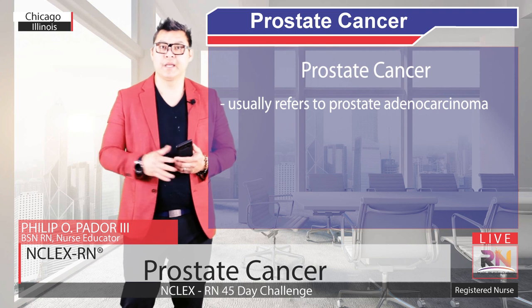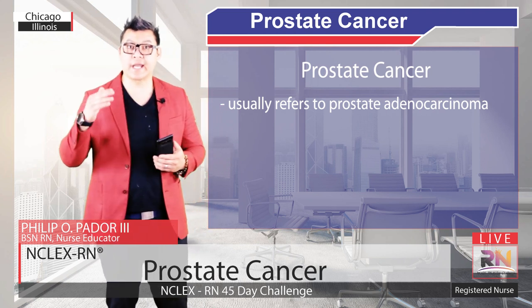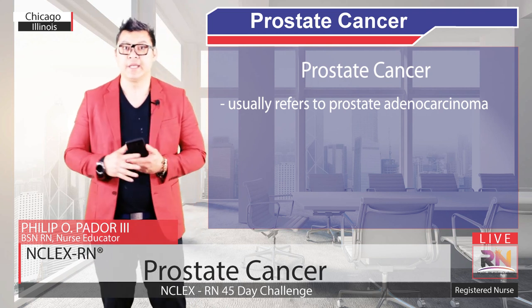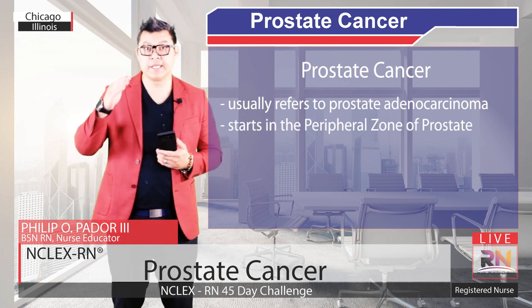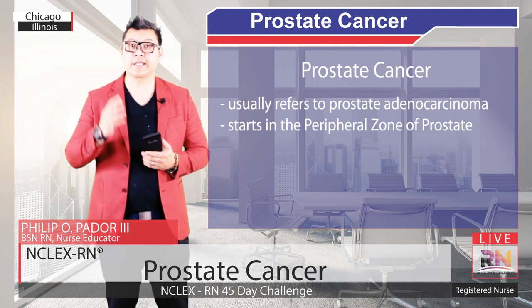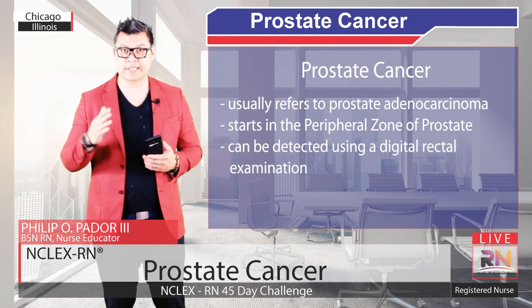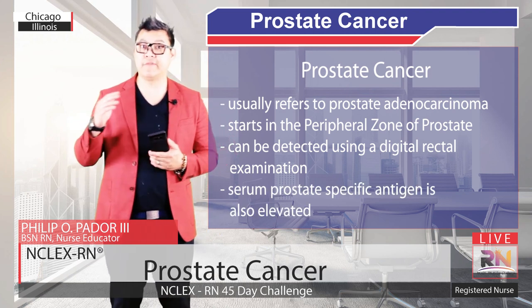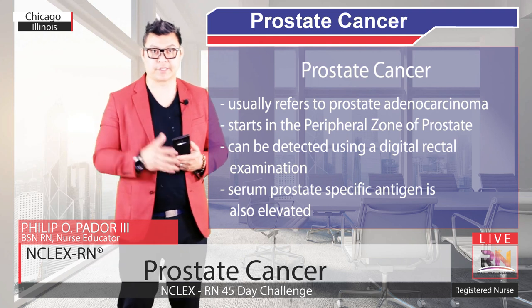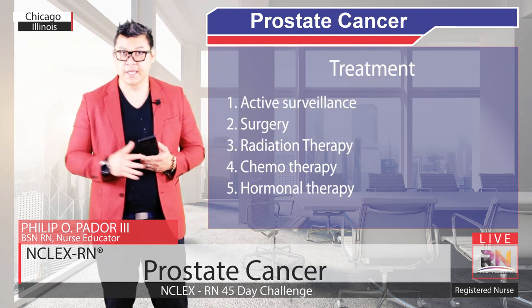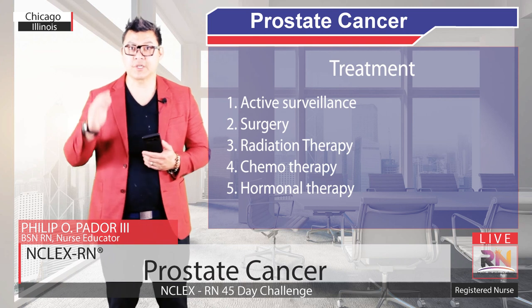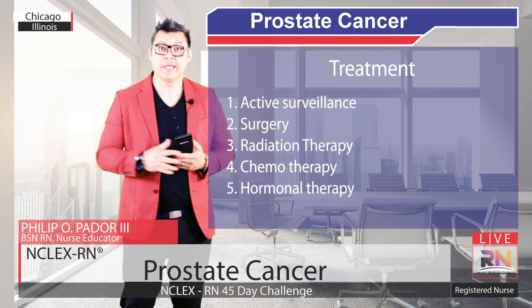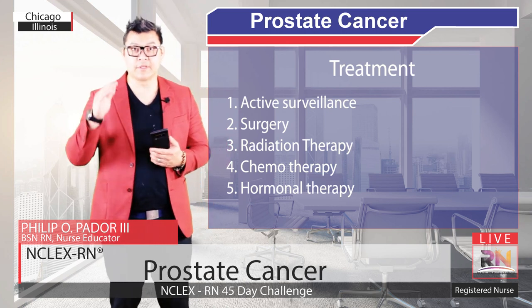As a quick recap, prostate cancer usually refers to prostate adenocarcinoma, but can also include more atypical tumors as well. It typically starts in the posterior peripheral zone of the prostate and can be detected using a digital rectal examination. Typically, serum prostate-specific antigen is also elevated in prostate cancer. Treatment might include chemotherapy, radiation therapy, surgery, and hormonal therapy, but active surveillance is also an option in many cases where the cancer remains confined to the prostate.